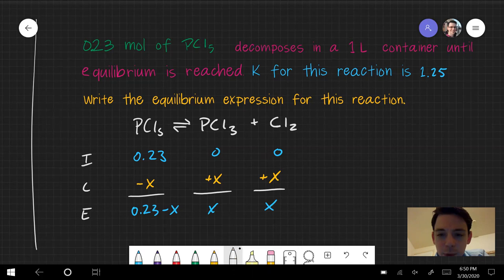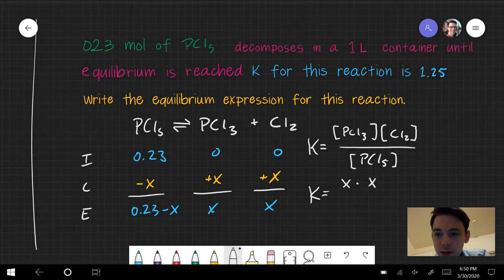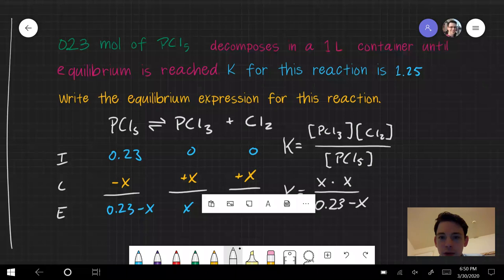So my equilibrium expression, that simply is the Q expression, but at equilibrium. Which this problem is at equilibrium. It's going to be products, PCl3 times Cl2, over reactants, PCl5. This one's pretty nice because there are no exponents, so it's fairly easy to write. I plug in my values. PCl3 is just going to be x times x, and the denominator is 0.23 minus x.